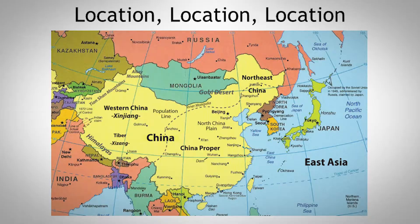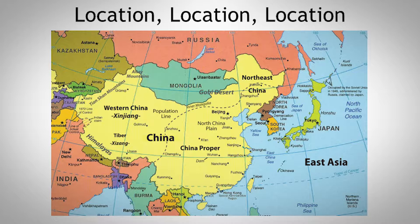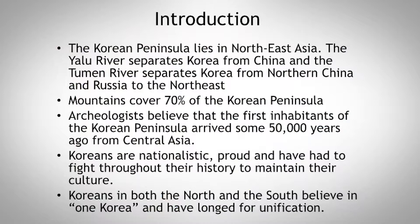As they say in real estate: location, location, location. When we looked at European history and World War II, we saw Poland being between Germany and Russia — two large, powerful nations — and having a hard history because of that. The same could be said for Korea, located on a peninsula between China, or northern China, Japan, and to the east, maritime Russia. This geography and location is going to have a large impact on Korean history.